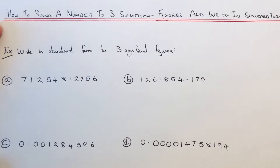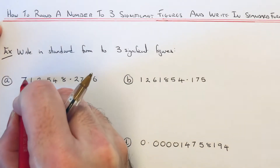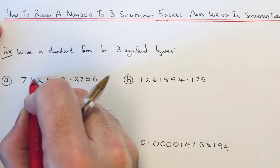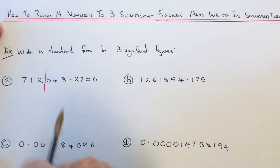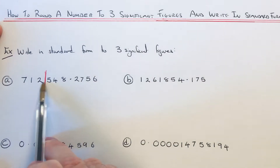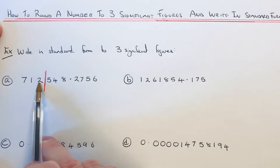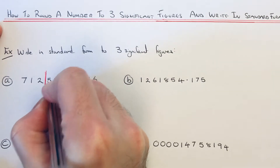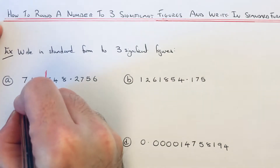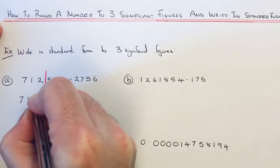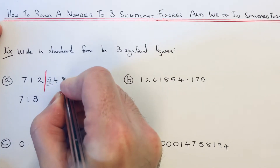First, you need to round the number to three significant figures — that is three numbers from the start of the number. So if we go one, two, three, we've got two choices: it will be seven one two, or we round it up to seven one three. The number after the line is five, so we round it up to seven one three.